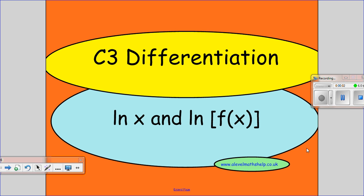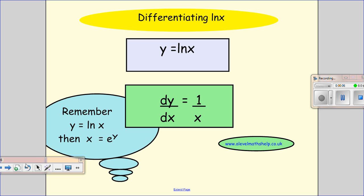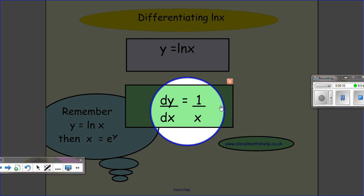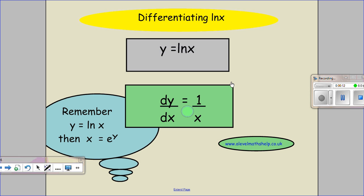Hi, in this video we're going to be looking at differentiating ln x and ln of a function of x. When we differentiate ln x, we get 1 over x, so dy/dx equals 1 over x. In this video I'm not going to prove this result and the result on the next screen, but if you want a proof, I can make a video showing the proofs. Just let me know.